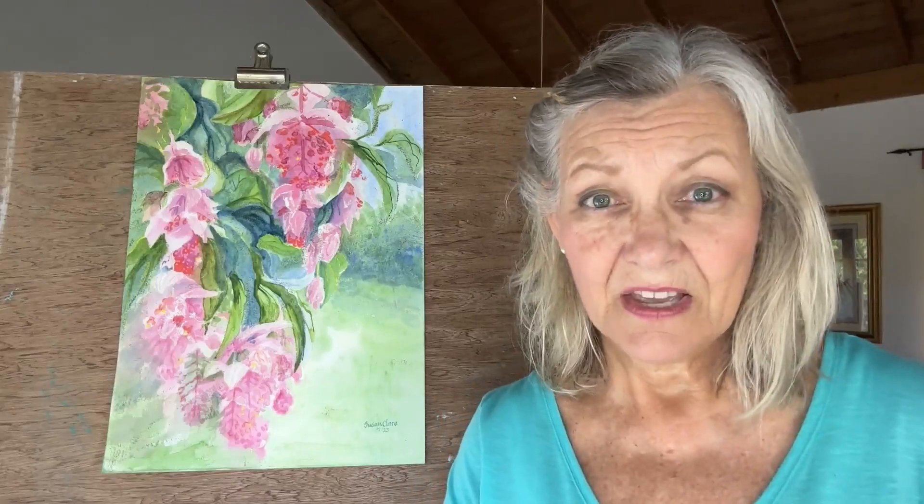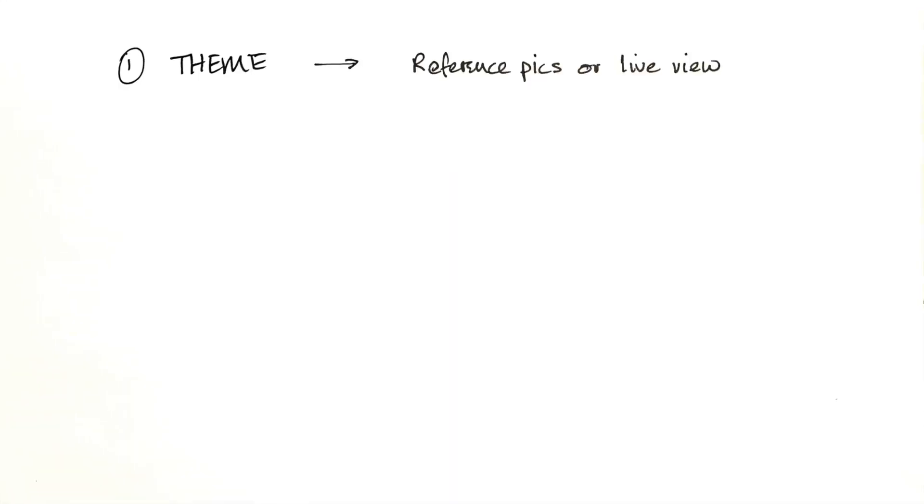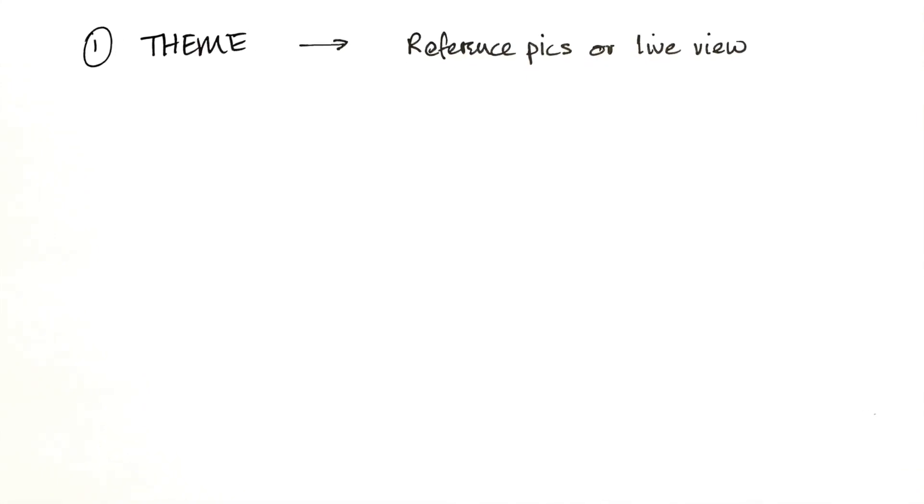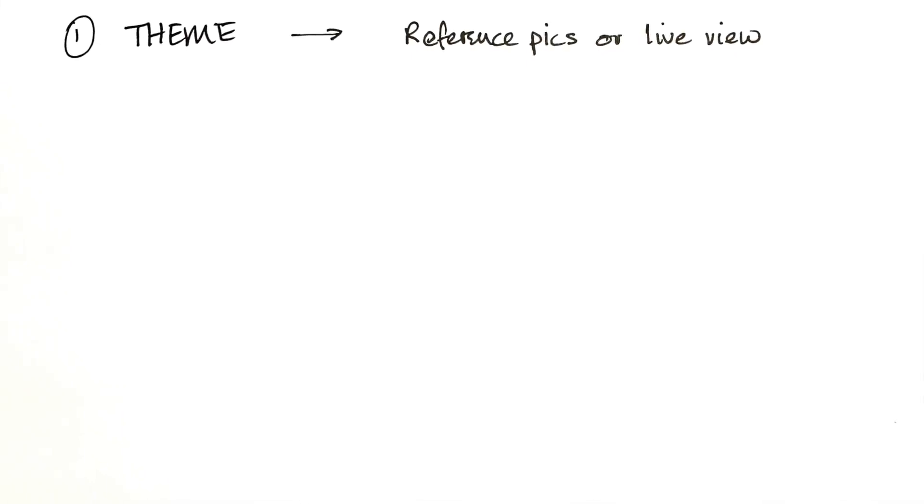First of all, you want to have a theme in mind — something you'd like to paint. It might be a pet portrait, your favourite items from your desk as a still life, something in your kitchen, your favourite view out of the window, or somewhere you went on holiday. These things can vary enormously from a still life with just a few things in front of you to a panoramic landscape. Your theme will come from reference pictures or a still life setup you're actually looking at.